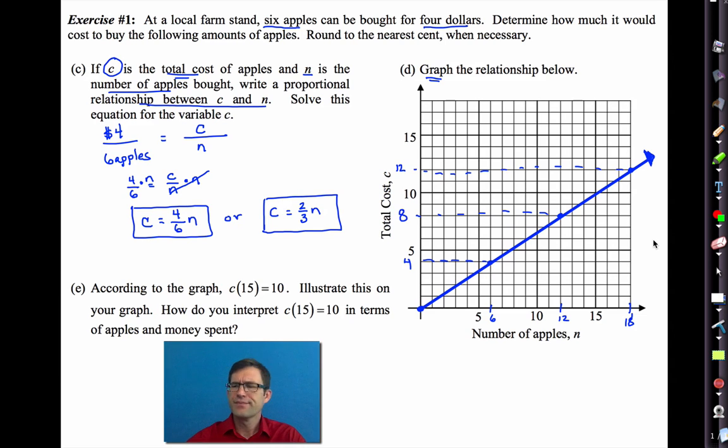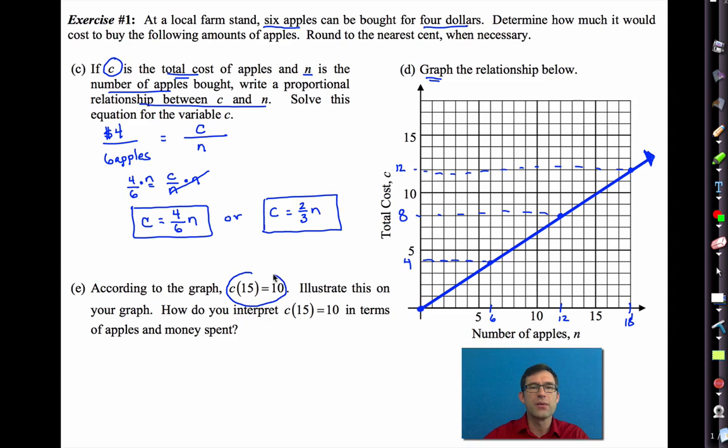Now, letter E, a little function notation. According to the graph, C of 15 equals 10. Illustrate this on your graph. Let's do it in red. Remember, this is our input. So if we go up to 15, what we see is our output is 10. Now, how do we interpret this? What we would say is 15 apples cost $10. That's our interpretation. The input was the number of apples, and the output was the cost. So when the input was 15 apples, the output was $10.